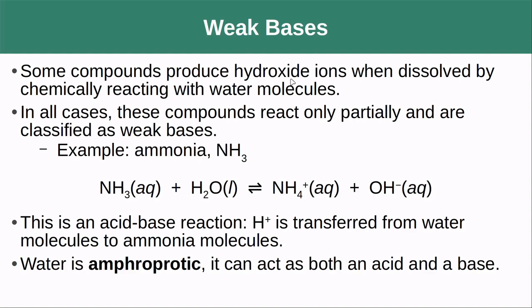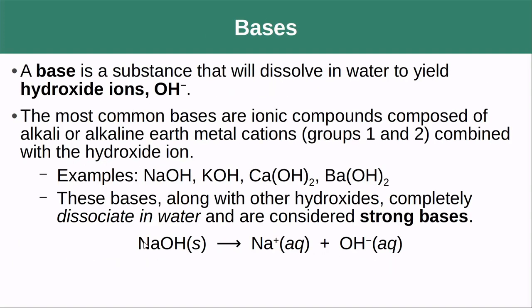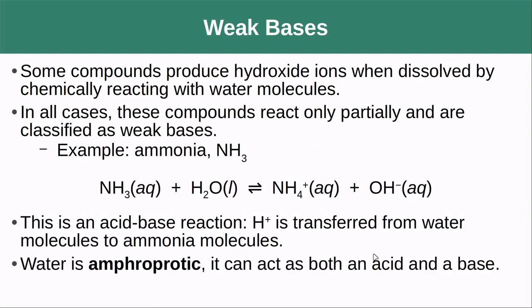Some bases don't actually contain hydroxide ions within them; instead they produce hydroxide ions when dissolved. In all cases these are only partially soluble or will only react partially, making them weak bases, just like we had weak acids. An example is ammonia — it has no hydroxide group, but when placed in water it pulls a hydrogen off water to form a positively charged ammonium ion and a hydroxide ion. So a base can either dissociate to produce hydroxide, or take a proton away from water to produce hydroxide.